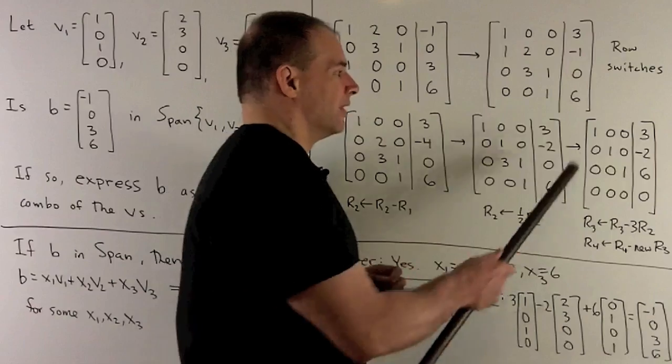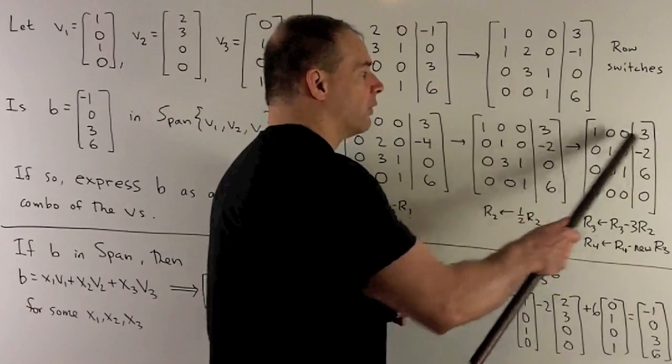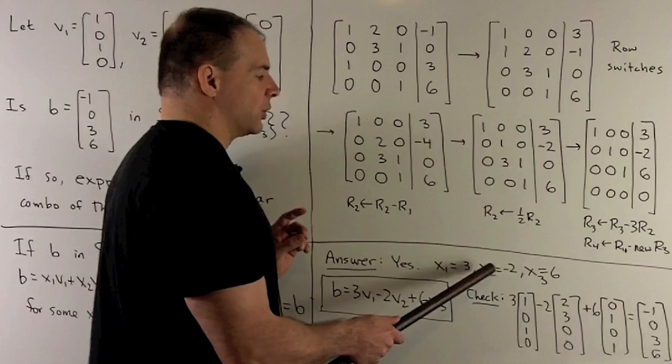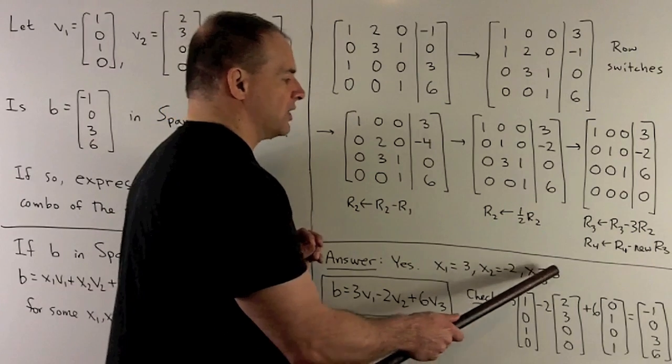So, this tells me our answer. We just read off what we get. We're going to have x1 equals 3, x2 equals -2, x3 equals 6.